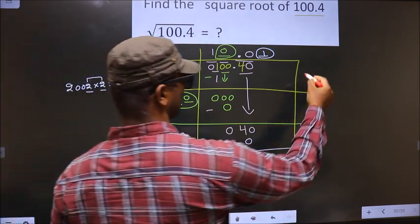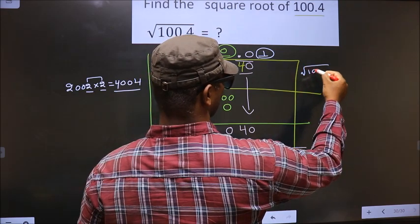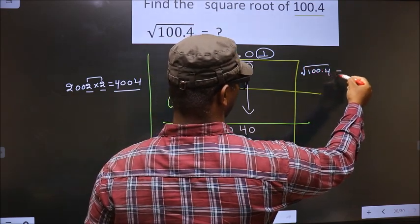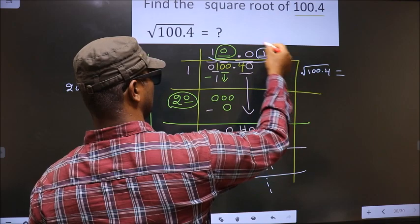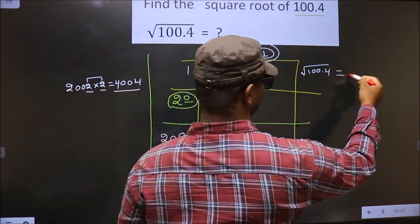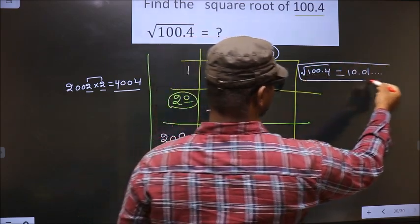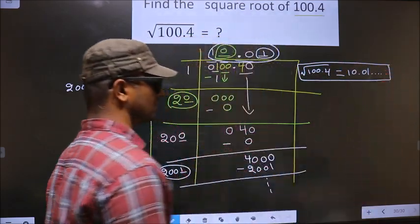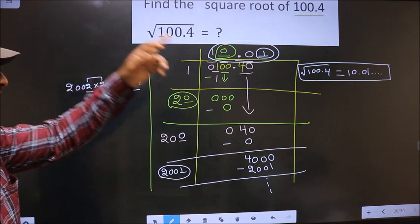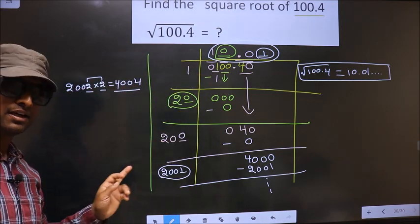And the square root of 100.4 is this one. That is 10.01 and it goes on. So this is our answer.